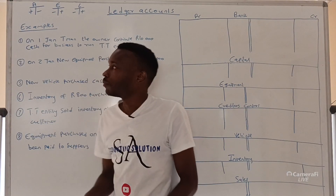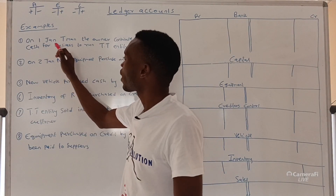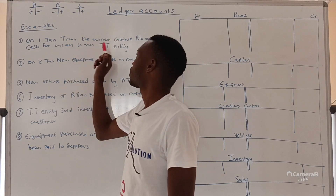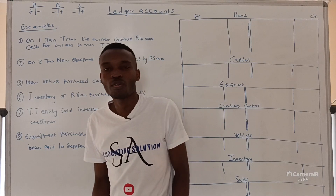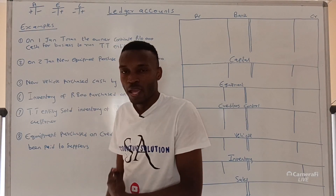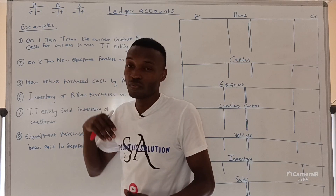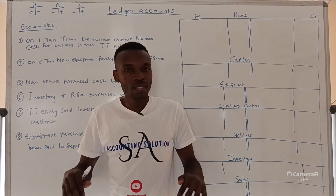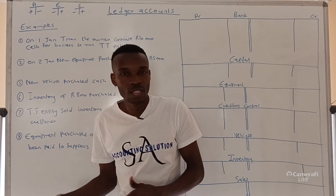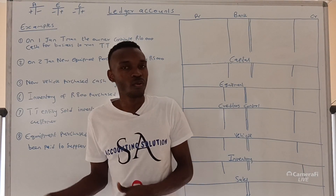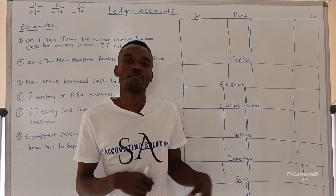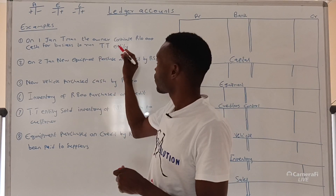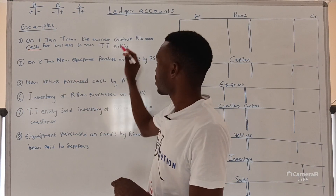Let's start with transaction number one: the owner contributes R10,000 cash for the business to run — the TT entity. This owner contributed an amount of R10,000. Normally when dealing with a sole trader, this is the first transaction because before we start a business we have to contribute capital — money or some assets to run that business. In this case he contributed cash, so the key point is cash.